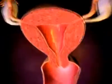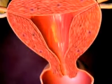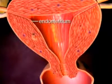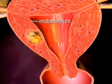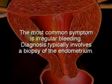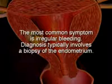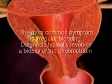The term uterine cancer refers to cancers affecting the uterus, endometrium, and cervix. Endometrial cancer is cancer of the endometrium, the inside lining of the uterus. The most common symptom is irregular bleeding, and diagnosis typically involves a biopsy of the endometrium.